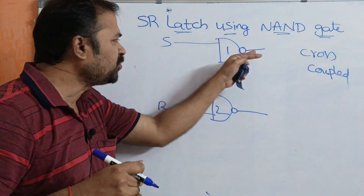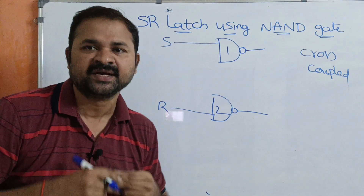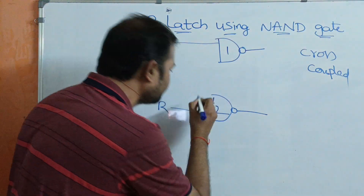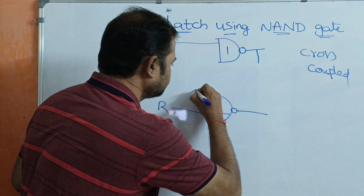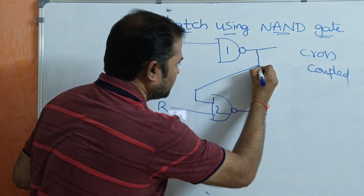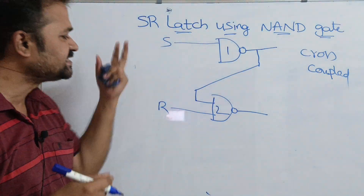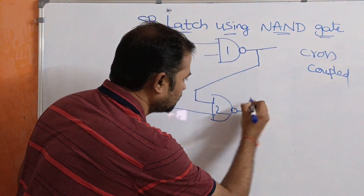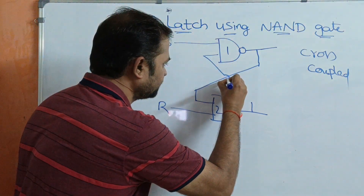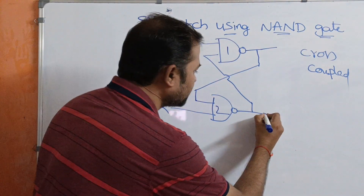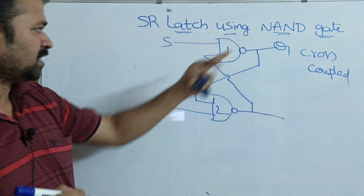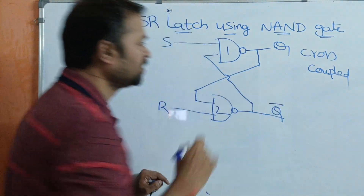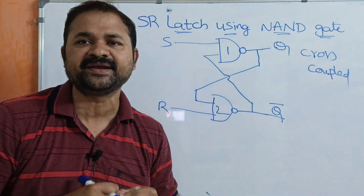Why are they called cross-coupled? Because the output of one NAND gate is applied as input to the next NAND gate. The second NAND gate receives input from the output of the first NAND gate, and the first NAND gate receives its second input from the output of the second NAND gate. The output of the first gate is Q, and the other output is Q bar. Q and Q bar are complemented to each other.